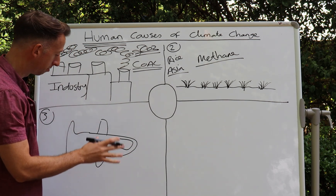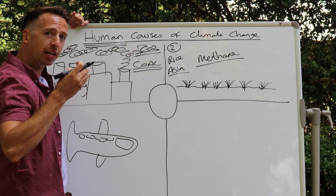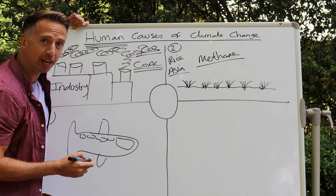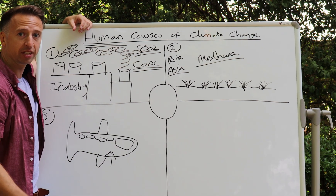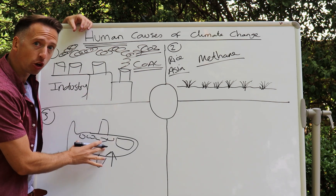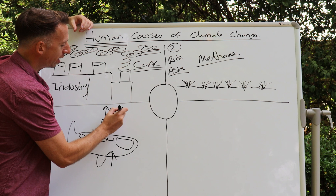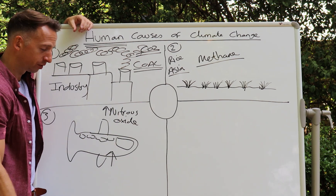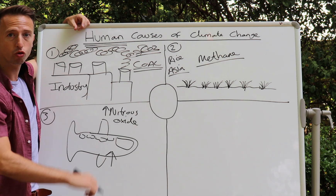Cause number three — and just in case you're wondering, that's supposed to be a plane. Especially in the more developed world, where people can afford air transportation, there has been a dramatic increase in people flying to different parts of the world. Because of that increase in activity, it has led to an increase in the gas nitrous oxide — another greenhouse gas.